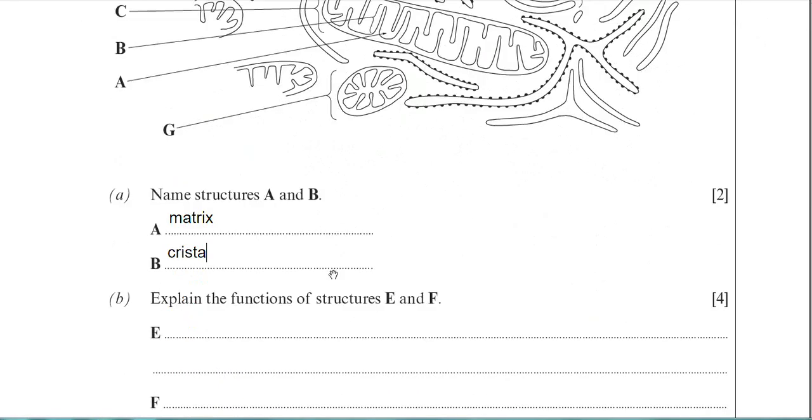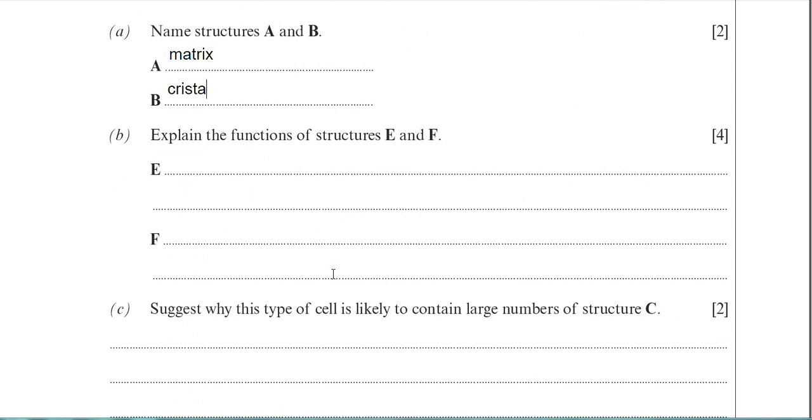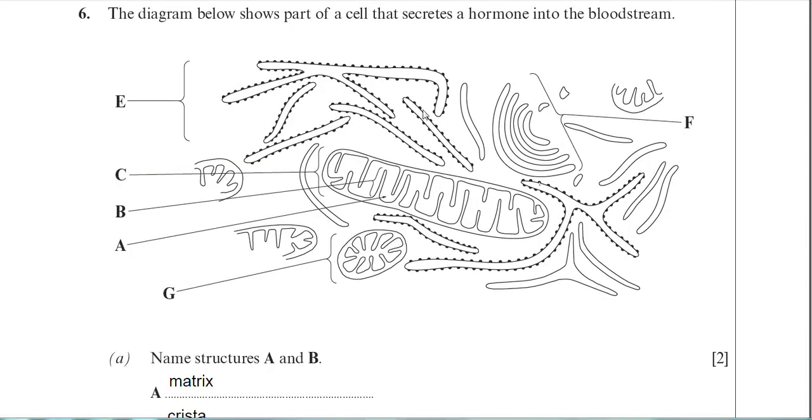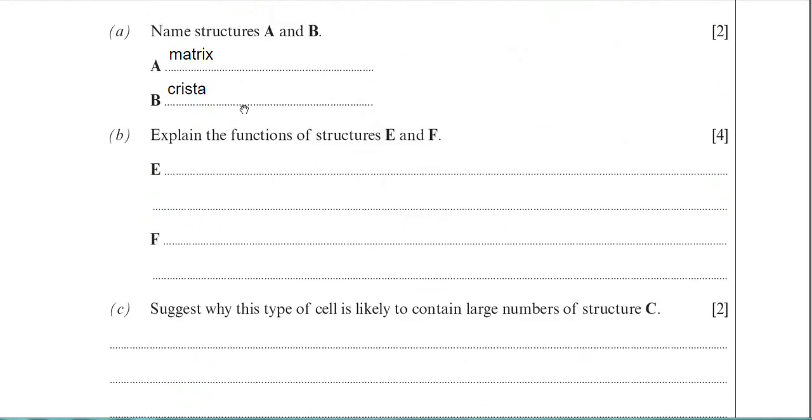So the functions then, E is the rough endoplasmic reticulum. A few functions of the rough ER as it's often abbreviated. It's the site of protein synthesis, of course, because of the ribosomes. So on the ribosomes you actually start producing and building up your polypeptide chain. It's where the amino acids are joined together. The other function of the rough ER is actually to transport your proteins around the cell. So if I scroll up to the diagram, the protein will enter inside the rough ER, and then it can travel through it to various parts of the cell.